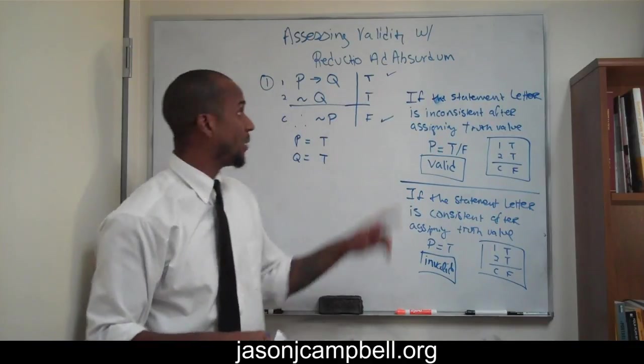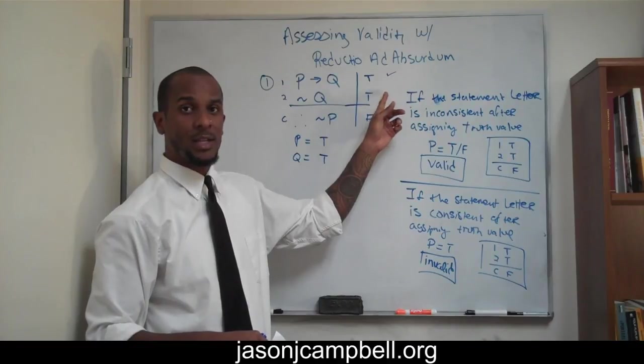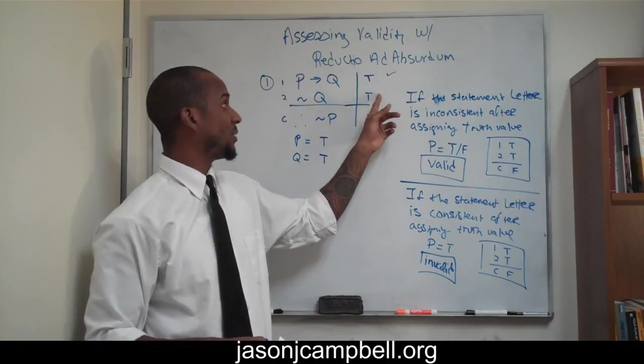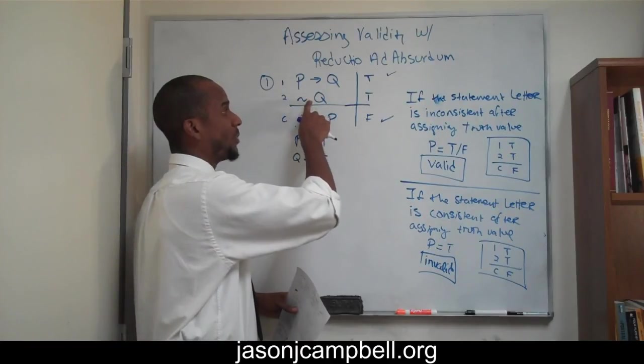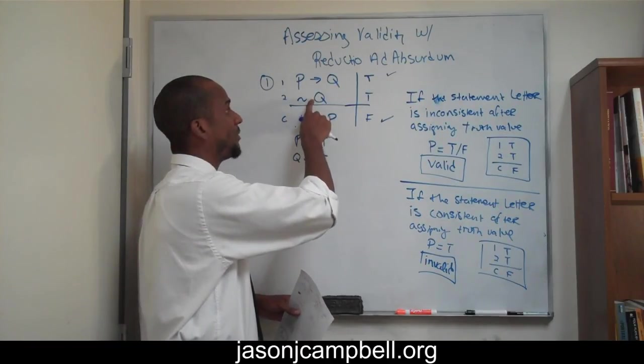Well, that would be a problem. Because now it doesn't satisfy. It doesn't satisfy. The only way for this to satisfy is for me to say that Q, in this case, would have to be false. Q would have to be false on line two.